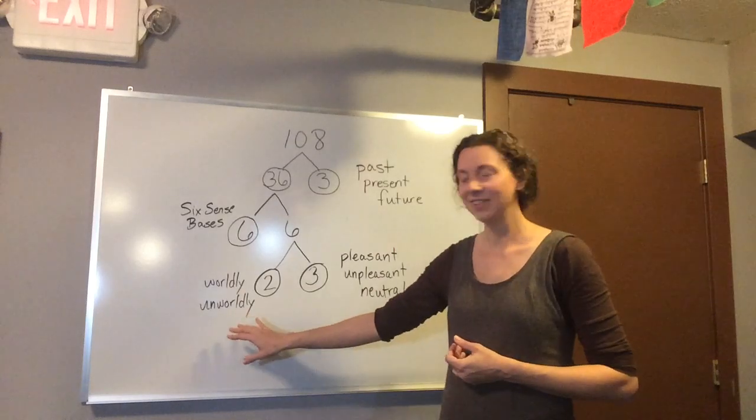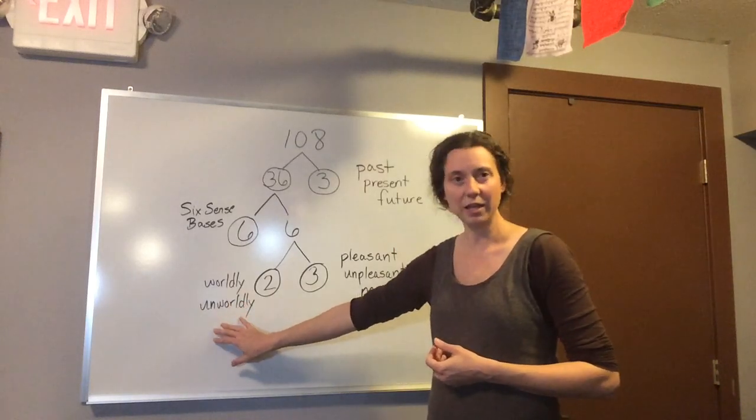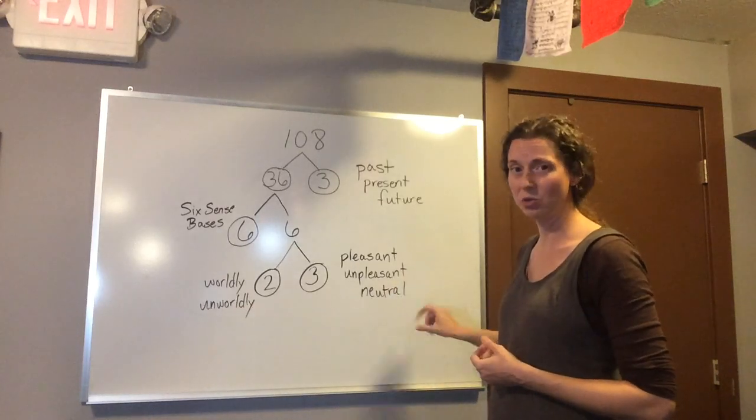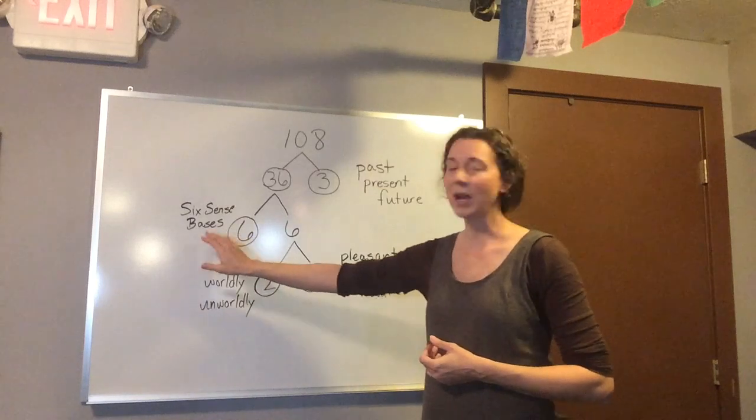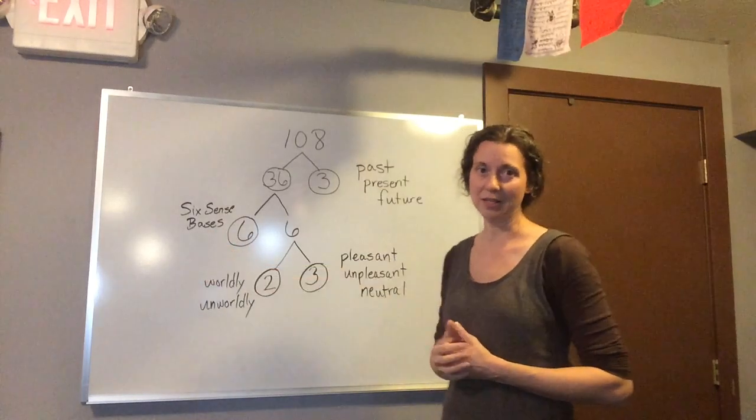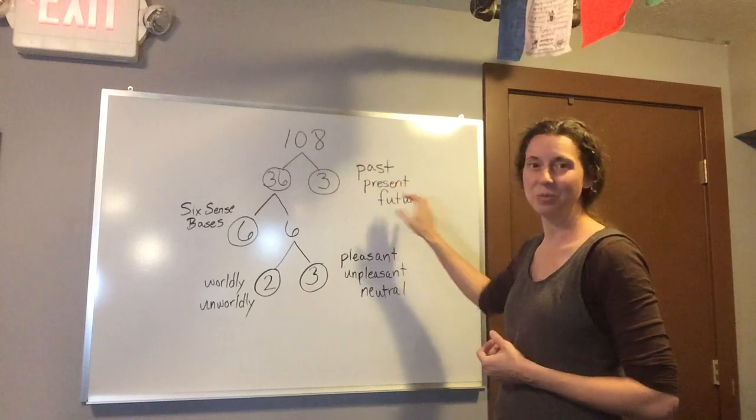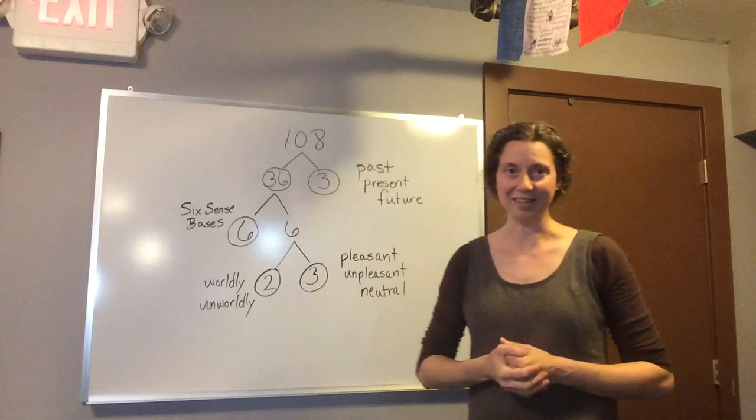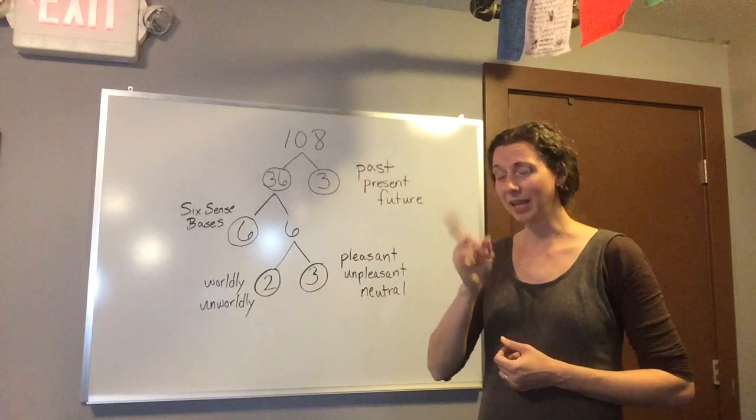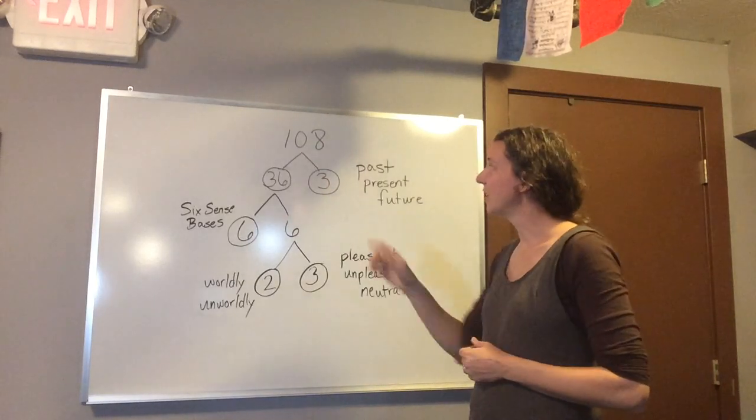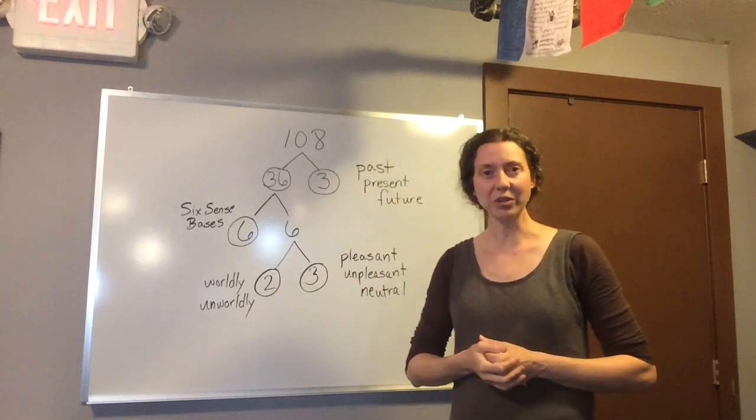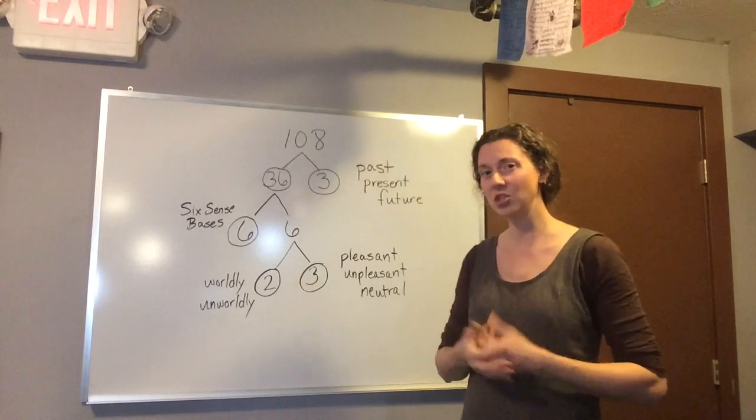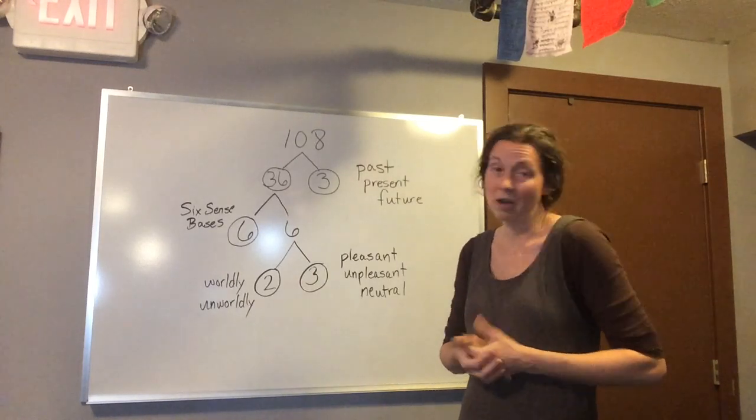When we combine worldly and unworldly with pleasant, unpleasant, and neutral feelings, recognized by our six sense bases in the past, present, and future, that brings us to 108. And the interesting thing is, those are all 108 different things that we could become attached to, or averse to.